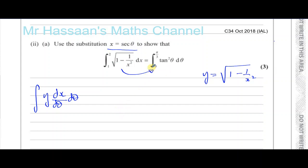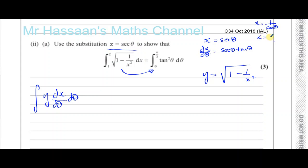I know that x equals sec theta. So if I differentiate this with respect to theta, I'm going to get dx/dθ equals sec theta tan theta. That's something you'll see in your formula book. You could even derive that yourself using the fact that x equals 1 over cosine theta, and then use the chain rule.